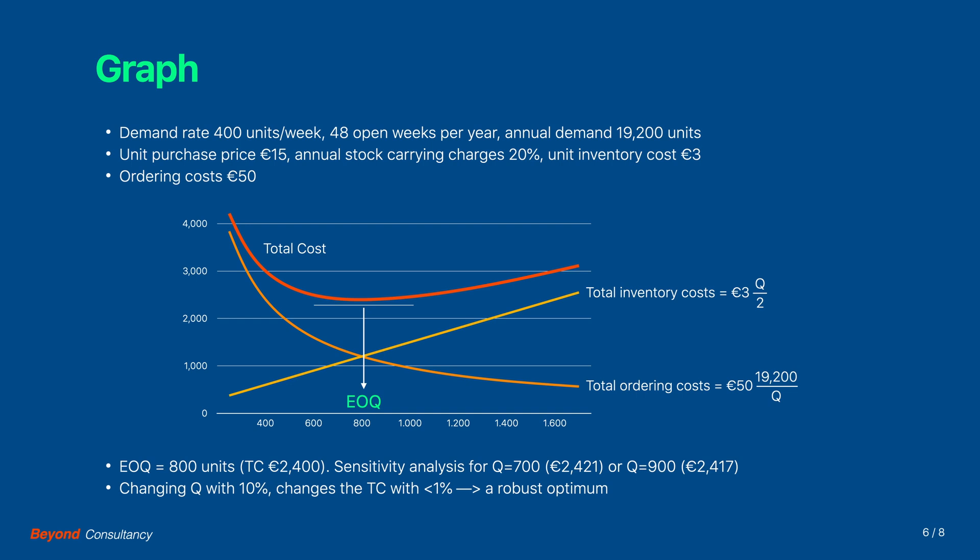Imagine that due to constraints in the pallet loading we always have to order in multiples of 250 units. Making an order of 750 units or 3 pallets will bring the total cost function sufficiently close to the lowest value, which corresponds with the optimal order size of 800.